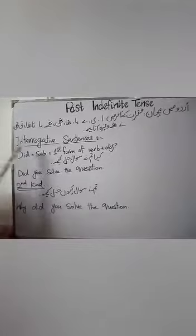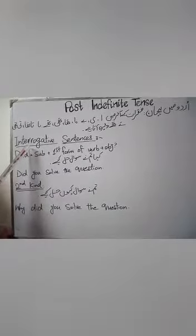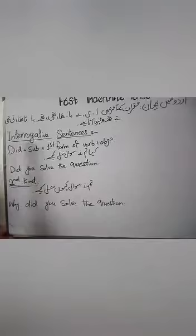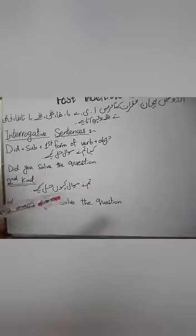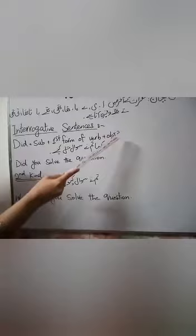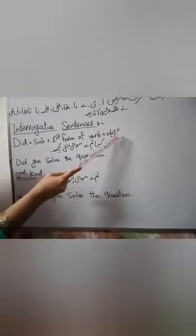Interrogative sentences means questions. We have to do the structure: we use 'did' — the subject will be added to the sentence, and then the first form of the verb and the object.